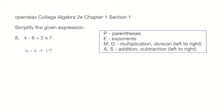Subtraction and addition are on the same level so we'll go from left to right and handle them as they occur. And so we have 4 - 6, so that is -2 + 14.